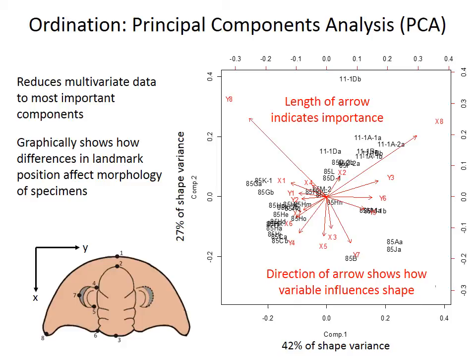Like the previous ordination of species abundance data, the specimens in this PCA are arranged by the similarity of their shapes, so specimens with similar shapes plot close together on the graph while specimens that differ a lot in shape plot far apart. The difference is that PCA plots the variables — in this case the coordinate positions — as arrows instead of as points. The length of the arrow indicates the importance or variability of that landmark in contributing to the overall variability in shape, and the orientation of the arrow shows how that landmark differs among all the different specimens.